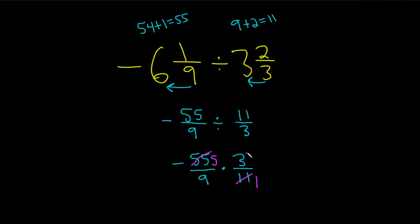Likewise, 3 goes into 3 one time, and 3 goes into 9 three times. Really cool. And now we can multiply straight across. So 5 times 1, that's equal to 5, over, and then 3 times 1 is equal to 3.